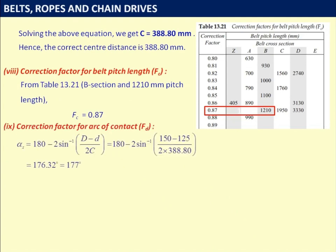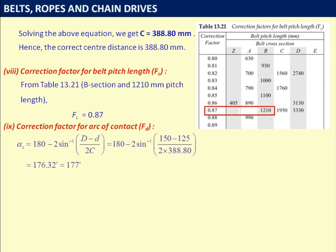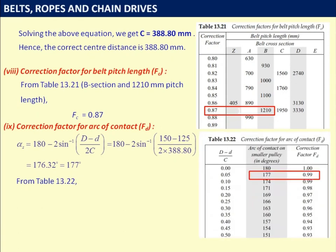Arc of contact for the smaller pulley: α_s = 180 − 2·sin⁻¹((D−d)/2C) = 176.32 ≈ 177 degrees. From table 13.22, corresponding to arc of contact 177 degrees on smaller pulley, correction factor Fd = 0.99.